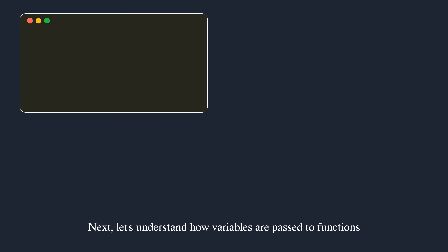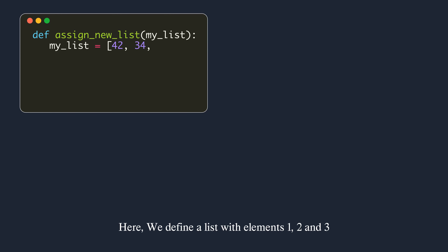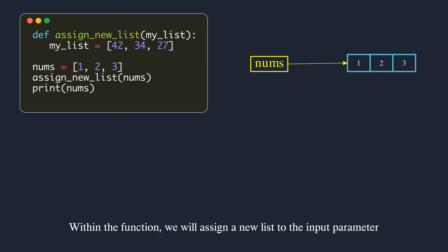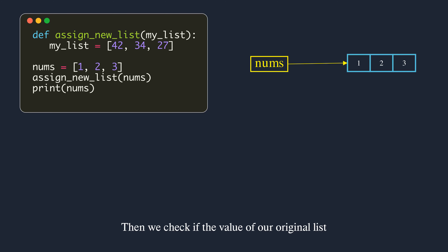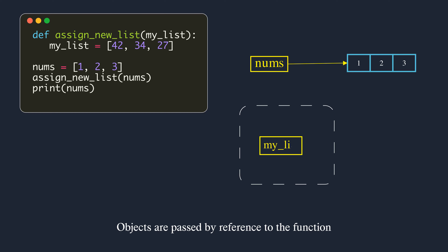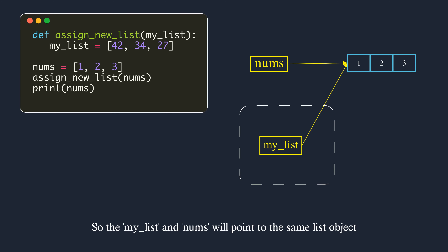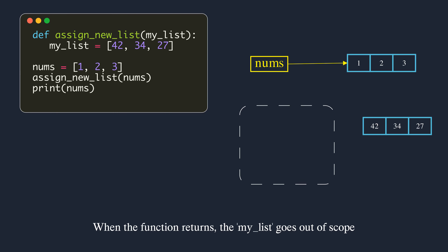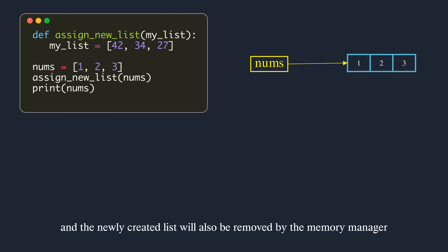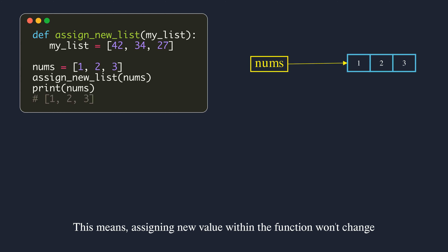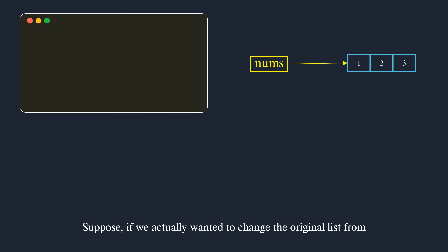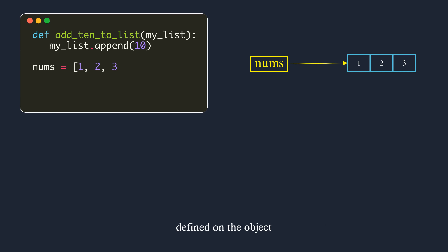Next, let's understand how variables are passed to functions. Here we define a list with elements one, two, and three. This list is passed as an argument to a function. Within the function we assign a new list to the input parameter, then check if the original list was modified outside the function. Functions have separate scope. Objects are passed by reference to the function — both my_list and nums will point to the same list object. But within the function, when a new list is assigned to my_list, a new list object is created and my_list points to it. When the function returns, my_list goes out of scope and the newly created list is removed by the memory manager since there are no references to it. Assigning a new value within the function won't change the original variable outside.